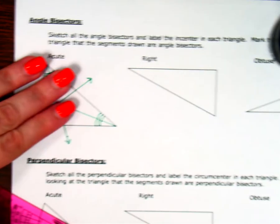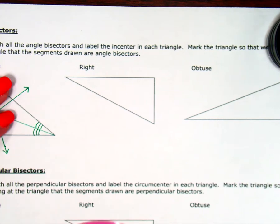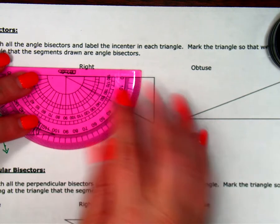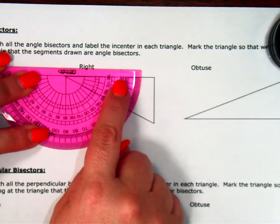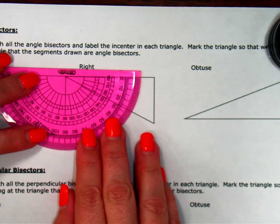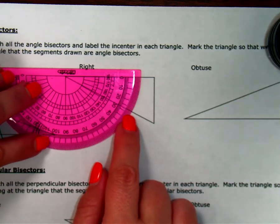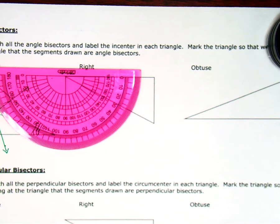Alright, for my right triangle, we're going to do the same process. I'm going to start with this left angle. Again, notice my zero is on this set, it's right here. So I'm going to use those numbers when I measure. So when I measure out that angle, that's about 28 degrees, and half of 28 is 14.